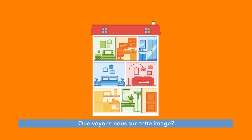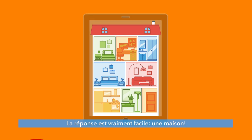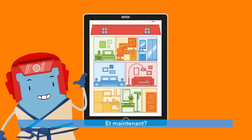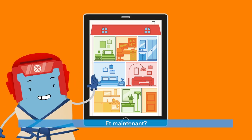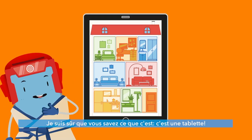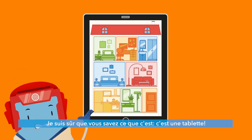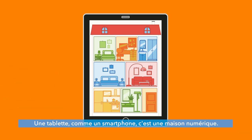What can we see in this image? Well, the answer is really simple — it's a house! What about now? I'm sure you know what it is. It's a tablet. A tablet, like a smartphone, is your digital home.